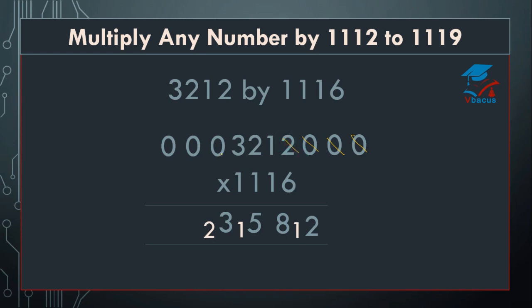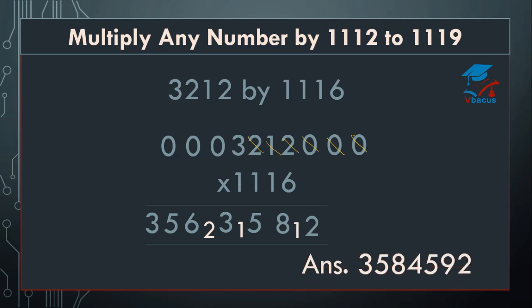Cut 2. 6 zeros are 0 plus 3 equals 3, plus 2 equals 5, plus 1 equals 6. Cut 1. 6 zeros are 0 plus 3 equals 3, plus 3 equals 5. Cut 2. 6 zeros are 0, plus 0 plus 0 plus 3 equals 3. So this 2 will be added to 6, 1 will be added to 3, and this 1 will be added to 8. Your final answer will become 3, 5, 8, 4, 5, 9, 2.